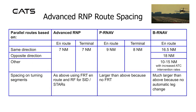Advanced RMP Route Spacing: There are different containment levels for RMP route spacing. For parallel routes based on advanced RMP, precision RNAV, or basic RNAV: same direction, opposite direction, or other — in the en route is 7 nautical miles and also 7 nautical miles for terminal, and 8 nautical miles. Whereas basic RNAV has different requirements for same direction, opposite direction, and other, with en route being 16.5 nautical miles, 18 nautical miles, and 10 to 15 nautical miles.